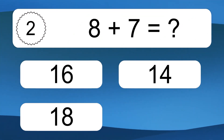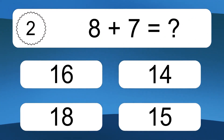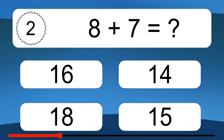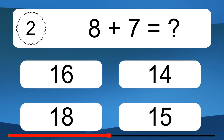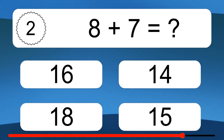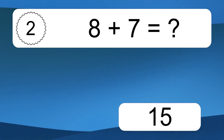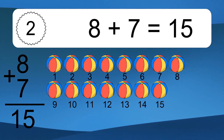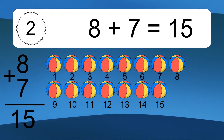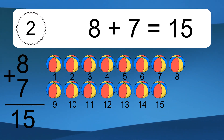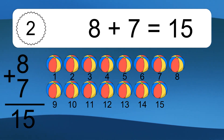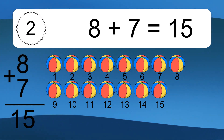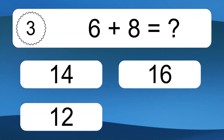8 plus 7 equals what? 8 plus 7 equals 15. Let's count it: 1, 2, 3, 4, 5, 6, 7, 8, 9, 10, 11, 12, 13, 14, 15.